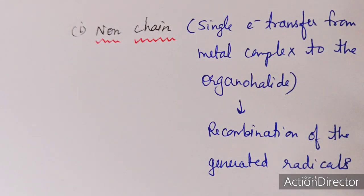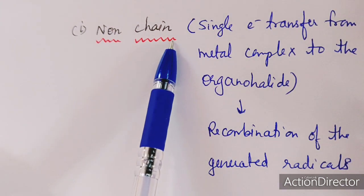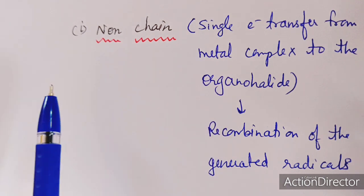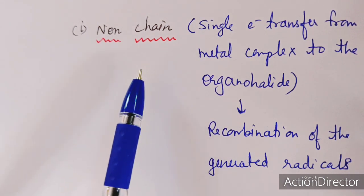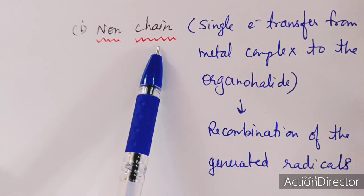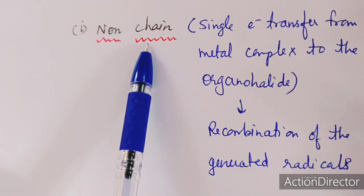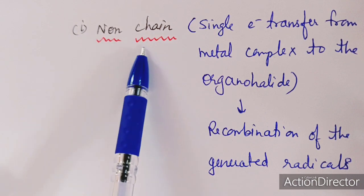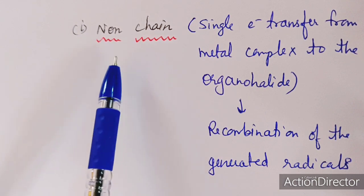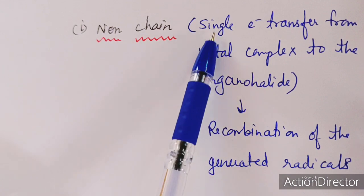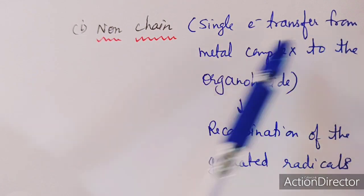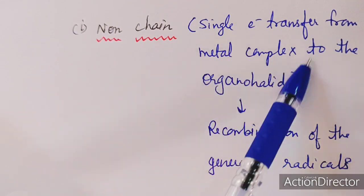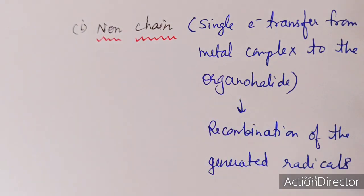The radical mechanism can be divided into two types: one is the non-chain radical mechanism and the other is the chain radical mechanism. As the name suggests, non-chain means the reaction can terminate easily. In this reaction, a single electron transfer occurs from the metal complex to the organohalide first.